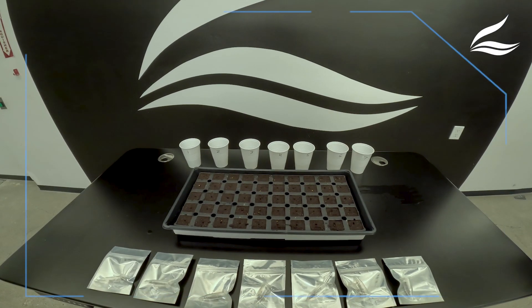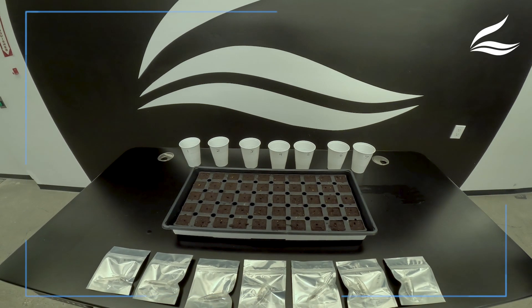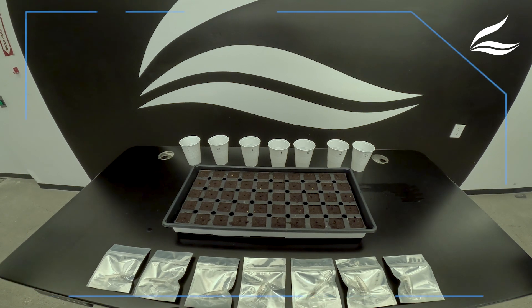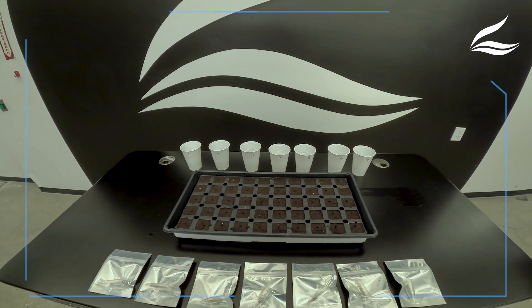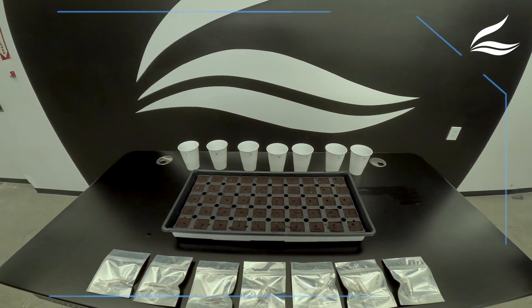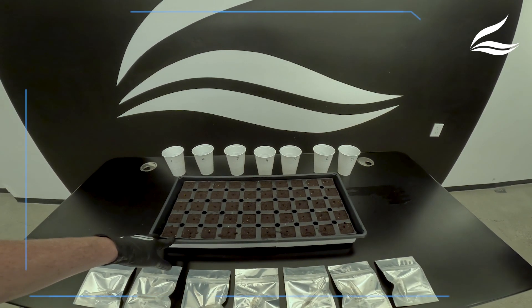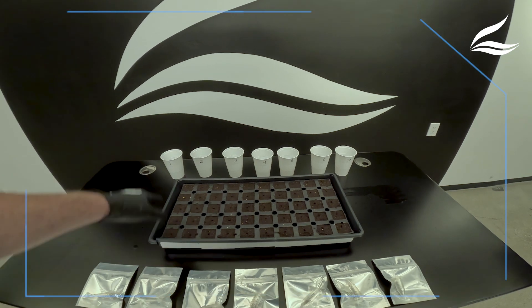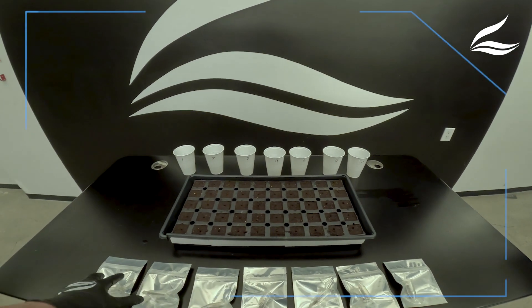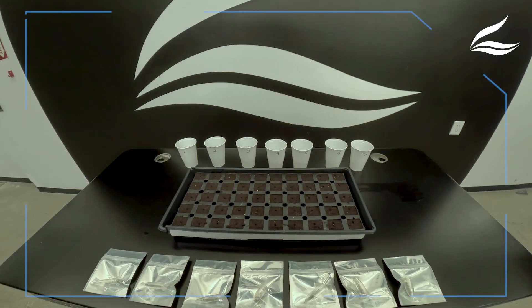All right, this is Chris with Advanced Nutrients. Today we're going to be going through the germination process. We're going to be starting with seven different varieties, filling up this tray. This is probably the easiest way to do this. We start with cups of water and the seeds. All right, let's get growing.